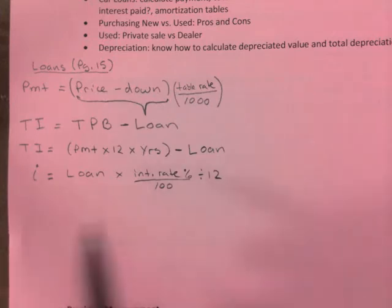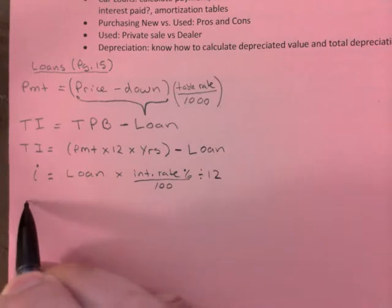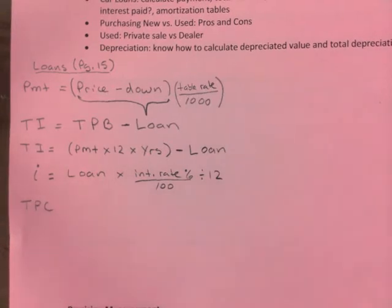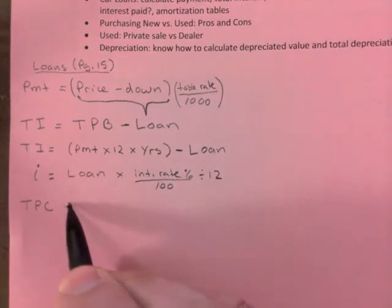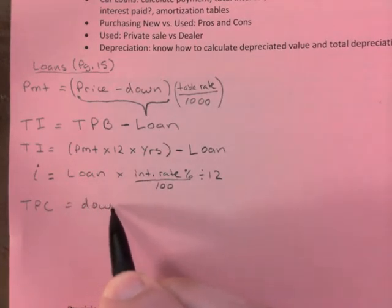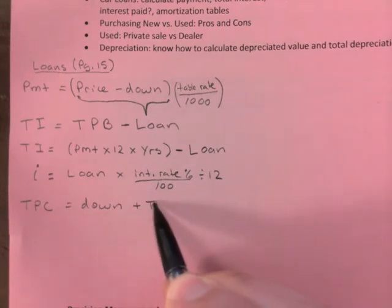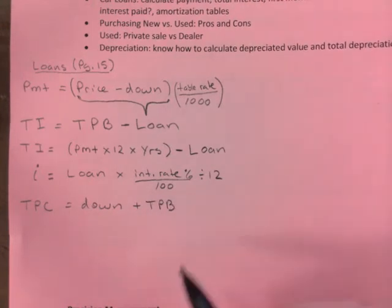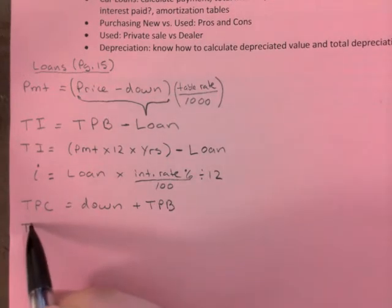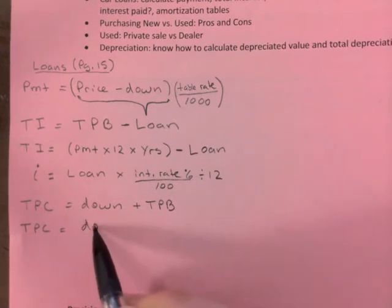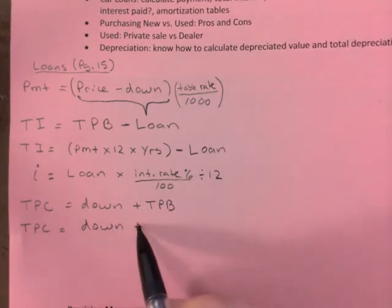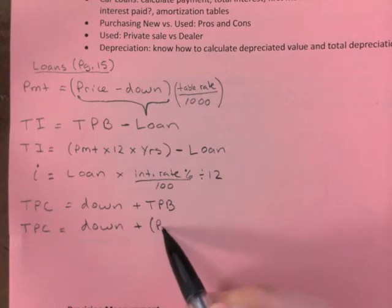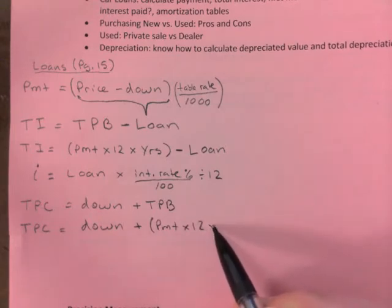All right, so here we go. This is first month and we have total paid for the car, if they ever ask. I will actually write that down later on what those letters stand for. You take your down and you add total paid to the bank to that. And this is how it translates, down plus payment times 12 times years.